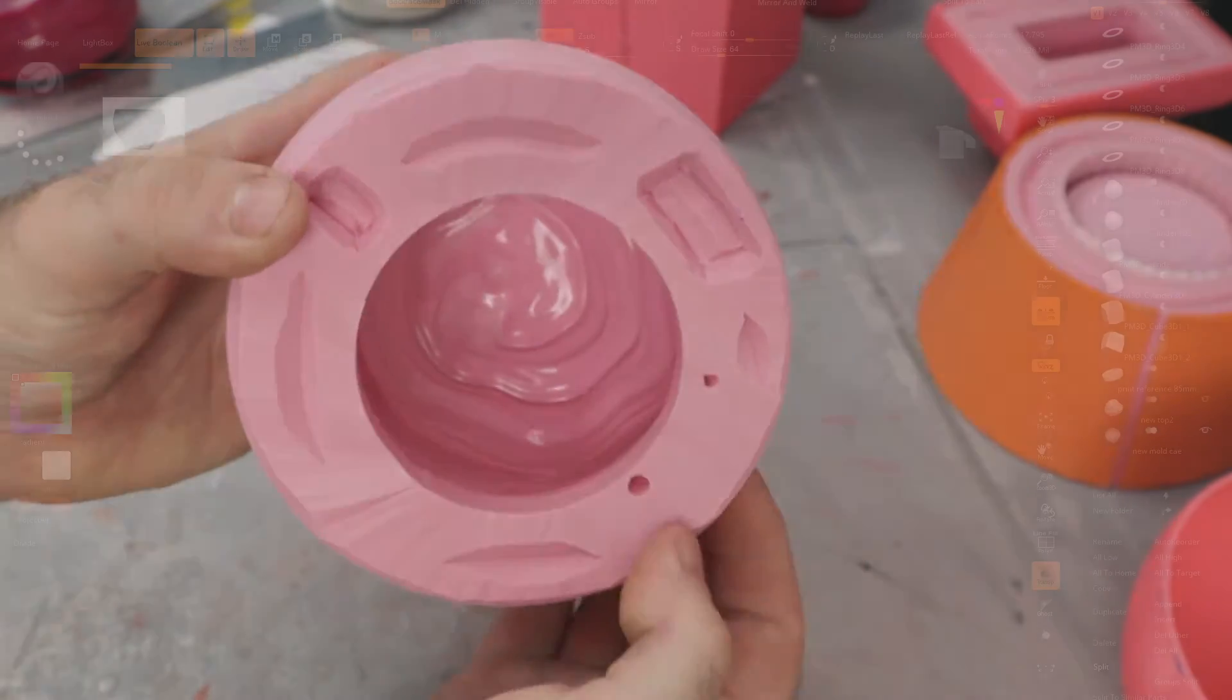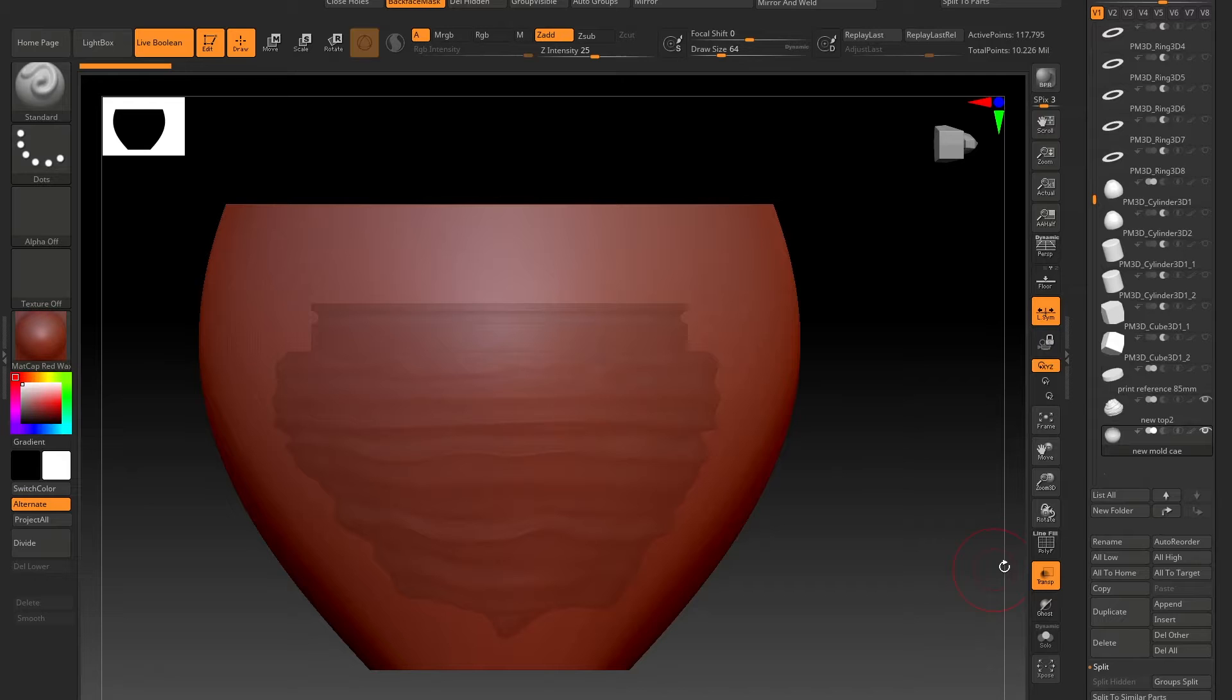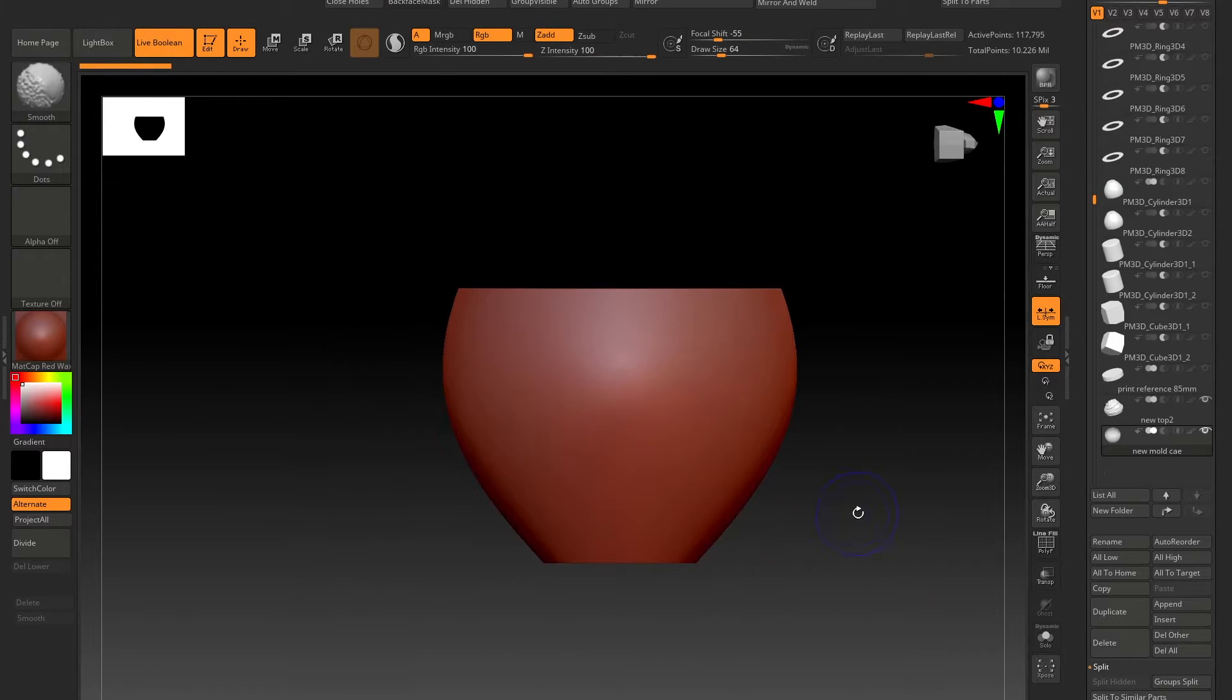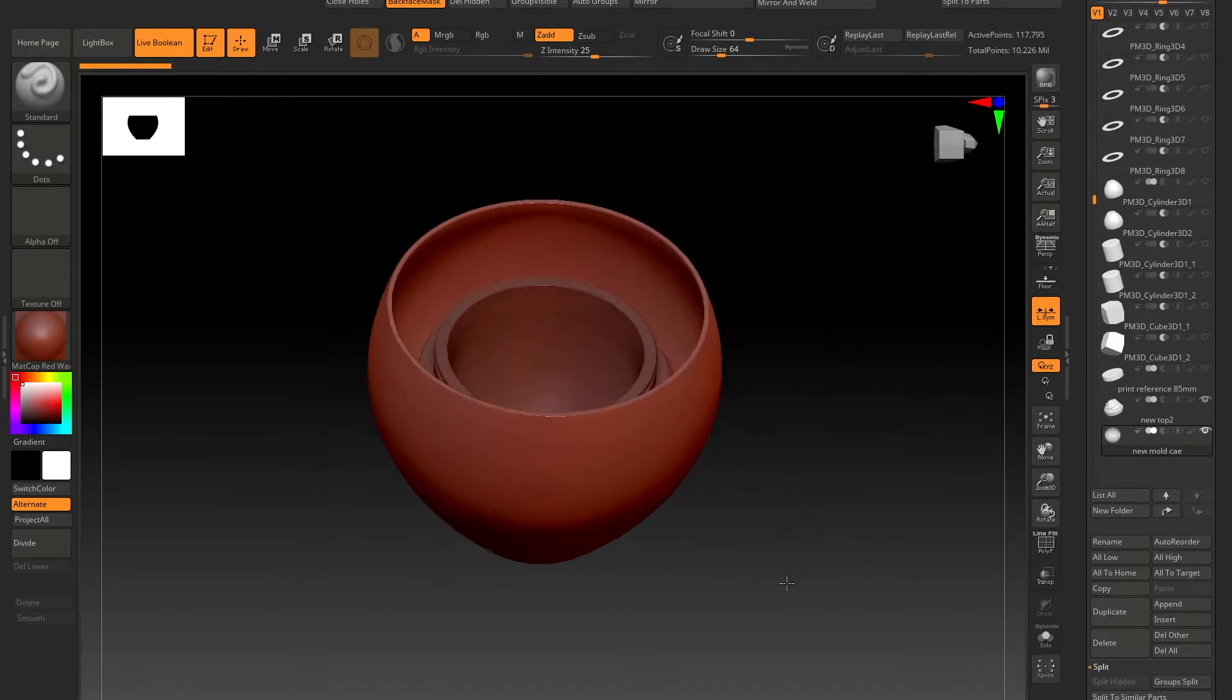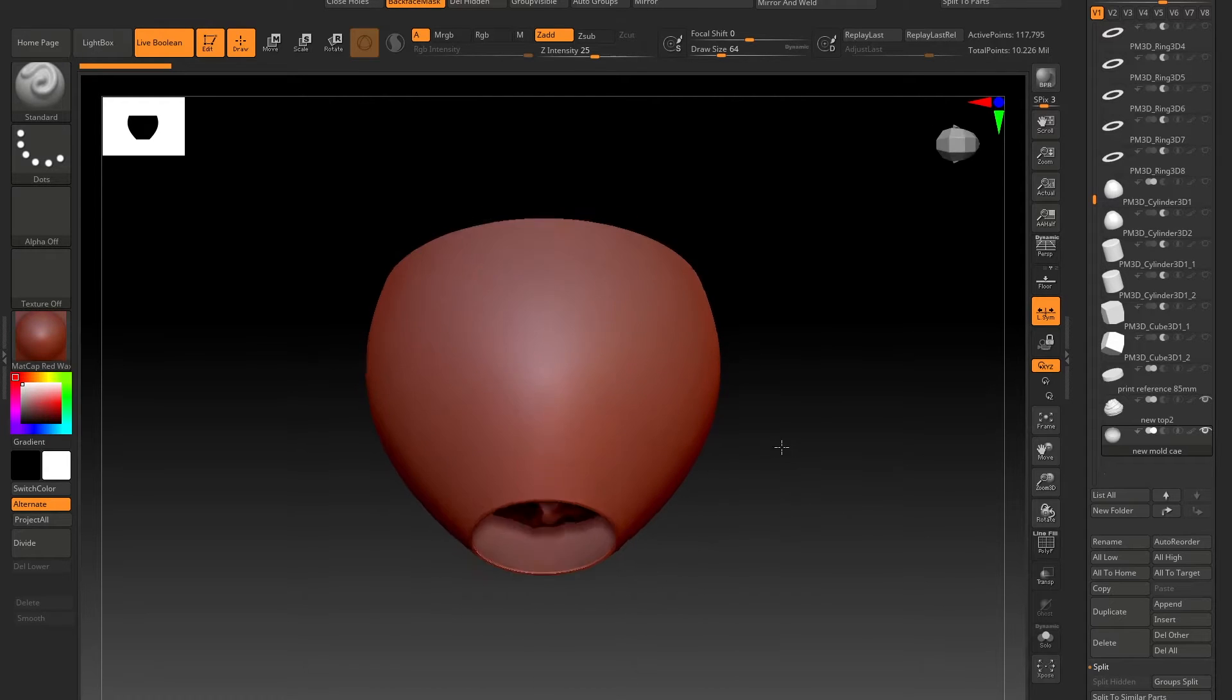Because I sculpt my mold masters digitally, it makes it very easy to design a simple mold case that wastes less silicone and provides a consistent wall thickness. You can see what I've done with this cupcake model. The mold case is designed to conform to its shape.